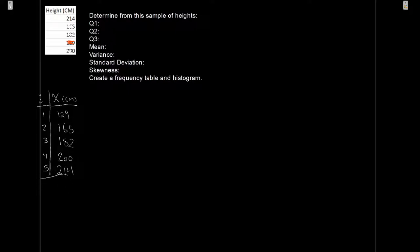What we can do is we can then sum all of these. I want to find the mean first because it just seems like a natural place to do it. So if we take the sum, 129, 165, 182, 200, 214, what do we get? We have 890.